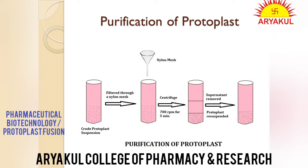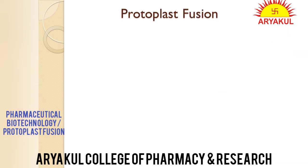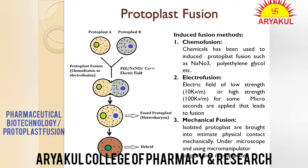Generally isolated protoplasts doosre se fuse nahi karti on their own. Fusion ke do types hain: spontaneous fusion method and induced fusion method. Spontaneous fusion normally occurs — adjacent cells aapas mein fuse ho jaati hain during plasmolysis — lekin usse heterokaryon nahi banta, usse homokaryon banta hai. So spontaneous fusion is not very important for us. Hume induced fusion methods study karni hain.